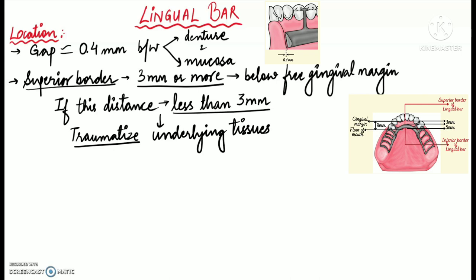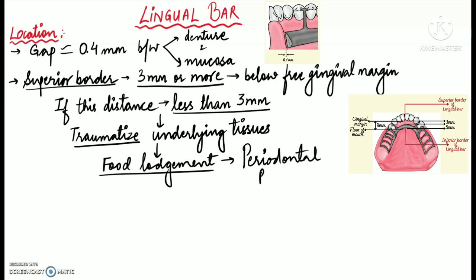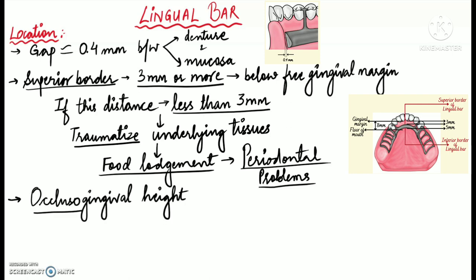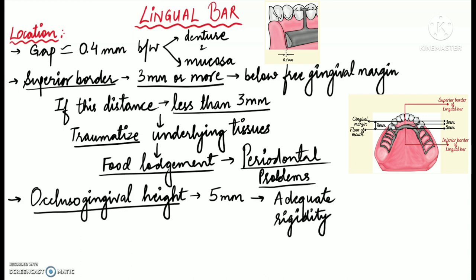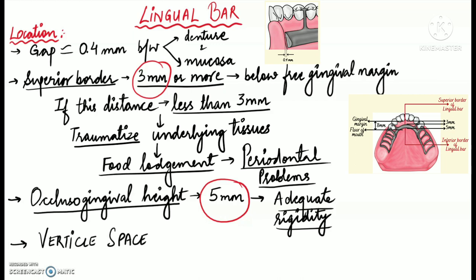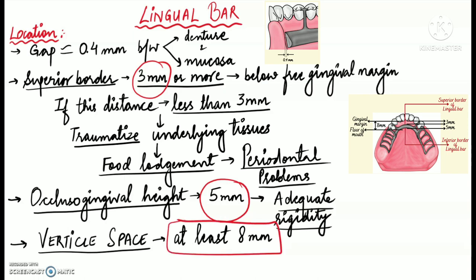Being too close to the gingival margin increases the likelihood of food lodgement under the connector, which could further result in periodontal problems. Therefore, the superior border should be kept as far below the free gingival margin as possible. A minimum occluso-gingival height of 5 millimeters is required to ensure adequate rigidity, meaning at least 8 millimeters of vertical space between the free gingival margin and the floor of the mouth is needed.